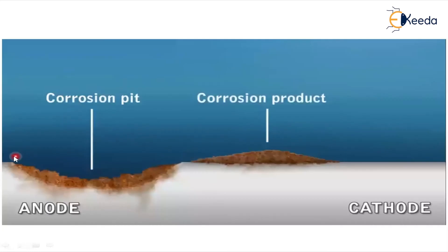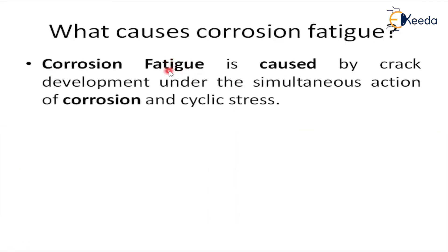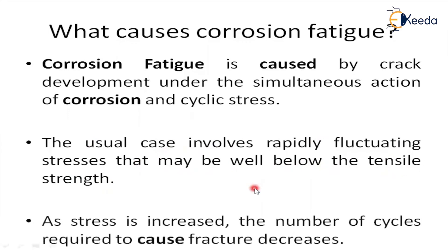The anode area is also represented as a corrosion pit, and the product on the surface is the corrosion product. Corrosion fatigue is caused by crack development under the simultaneous action of corrosion and cyclic stress. If corrosion happens on the surface due to oxygen or other reasons, and cyclic stress is applied simultaneously, cracks may develop. The applied stress is usually well below the tensile strength of the material.